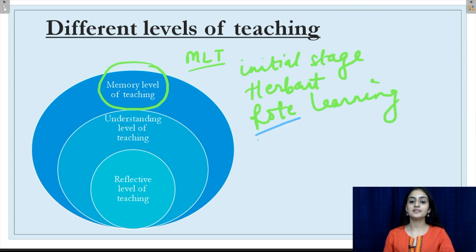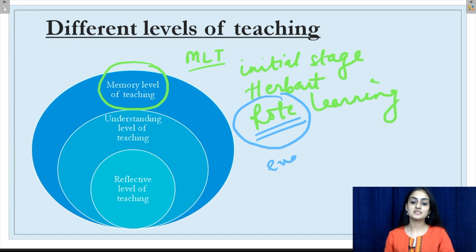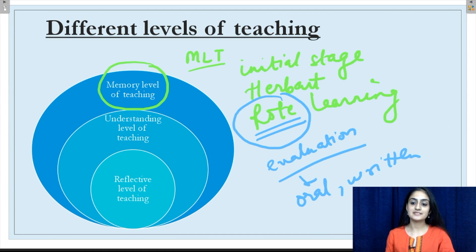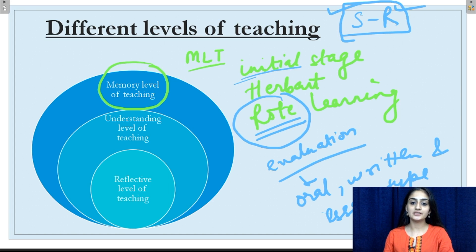Rote learning refers to memorizing a particular concept or topic repeatedly and being able to produce it at the time of evaluation. The evaluation system at this level includes oral, written, and essay type examinations. This basically includes a stimulus-response level of learning wherein a teacher teaches and the student learns the concept. So this is the basic or initial stage of teaching.